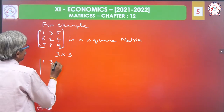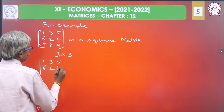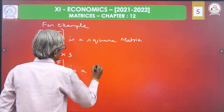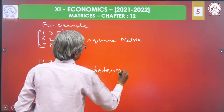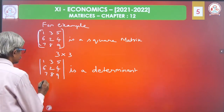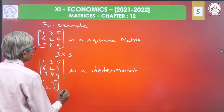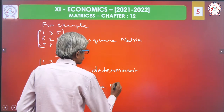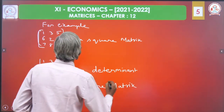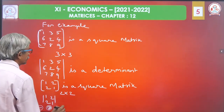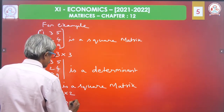The determinant with elements 1, 3, 5, 6, 2, 4, 7, 8, 9 is a 3 into 3 determinant. Similarly, 1, 2, 2, 1 is a 2 into 2 determinant — 2 rows, 2 columns.